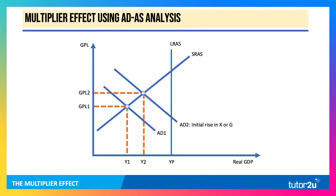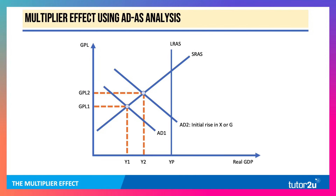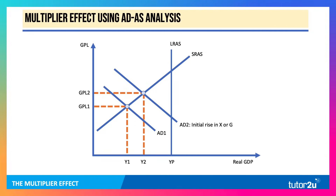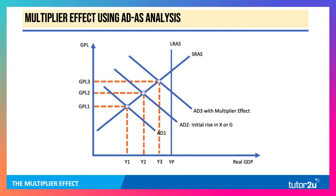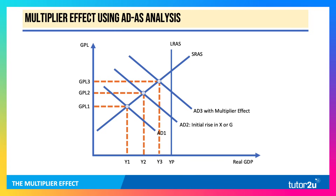So using ADAS analysis, here's an initial rise — for example, in exports, or maybe a fiscal stimulus, an increase in government spending — shifting AD from AD1 to AD2. So the initial rise in government spending, for example, could lead to an expansion of national output from Y1 to Y2. But with a multiplier effect, the final effect could be bigger — you might end up at an equilibrium of Y3 instead of Y2.